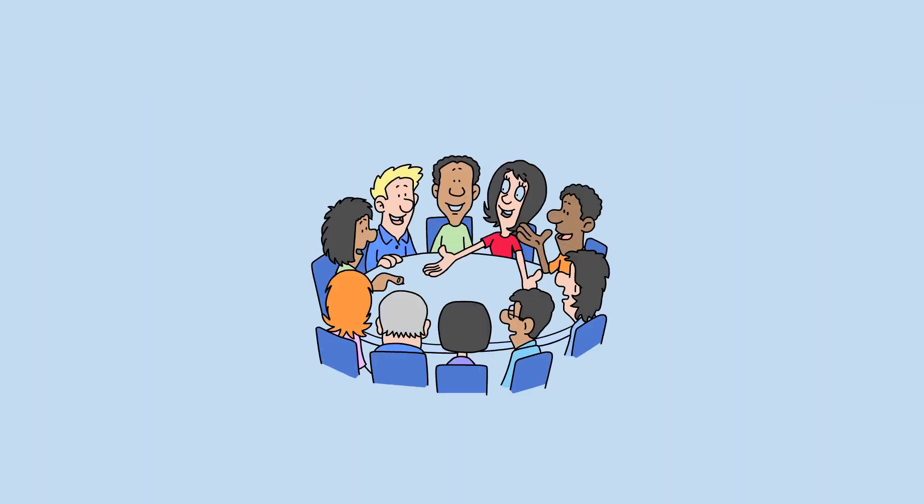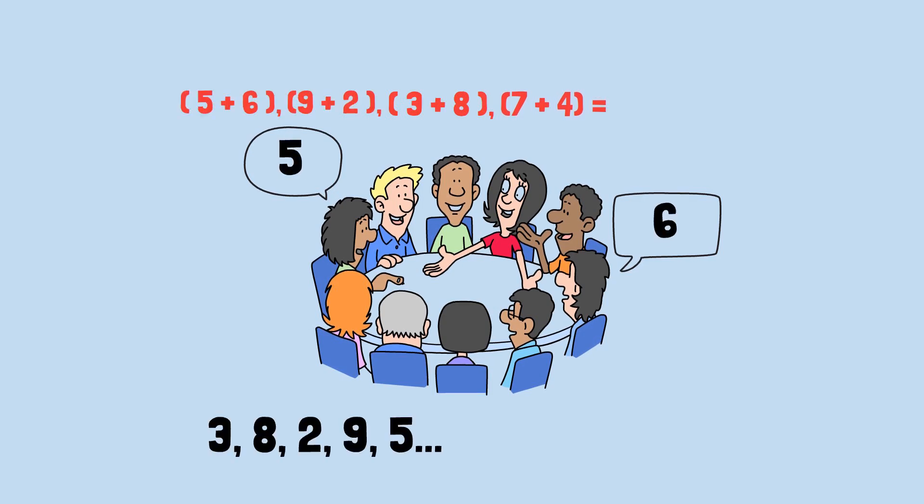Your friend goes first, confidently announcing 7. You follow with 4, bringing the total to 11. Back and forth you go: 3, 8, 2, 9, 5. The numbers seem random.